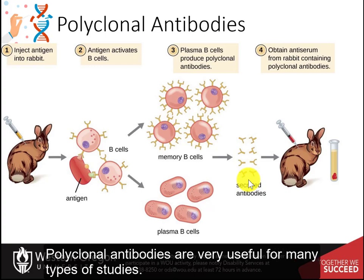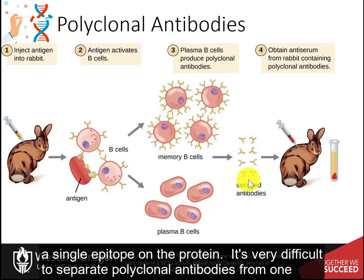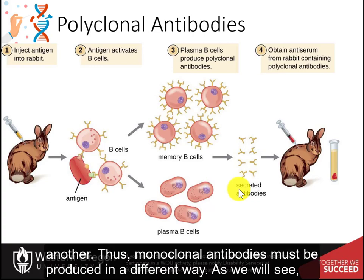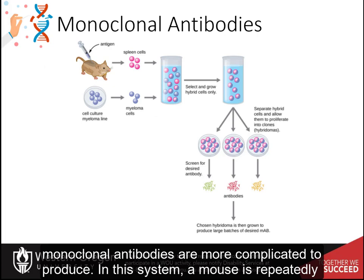Polyclonal antibodies are very useful for many types of studies. However, some studies require only a single or monoclonal antibody that recognizes a single epitope on the protein. It is very difficult to separate polyclonal antibodies from one another. Thus, monoclonal antibodies must be produced in a different way, and as we will see, they are more complicated to produce.